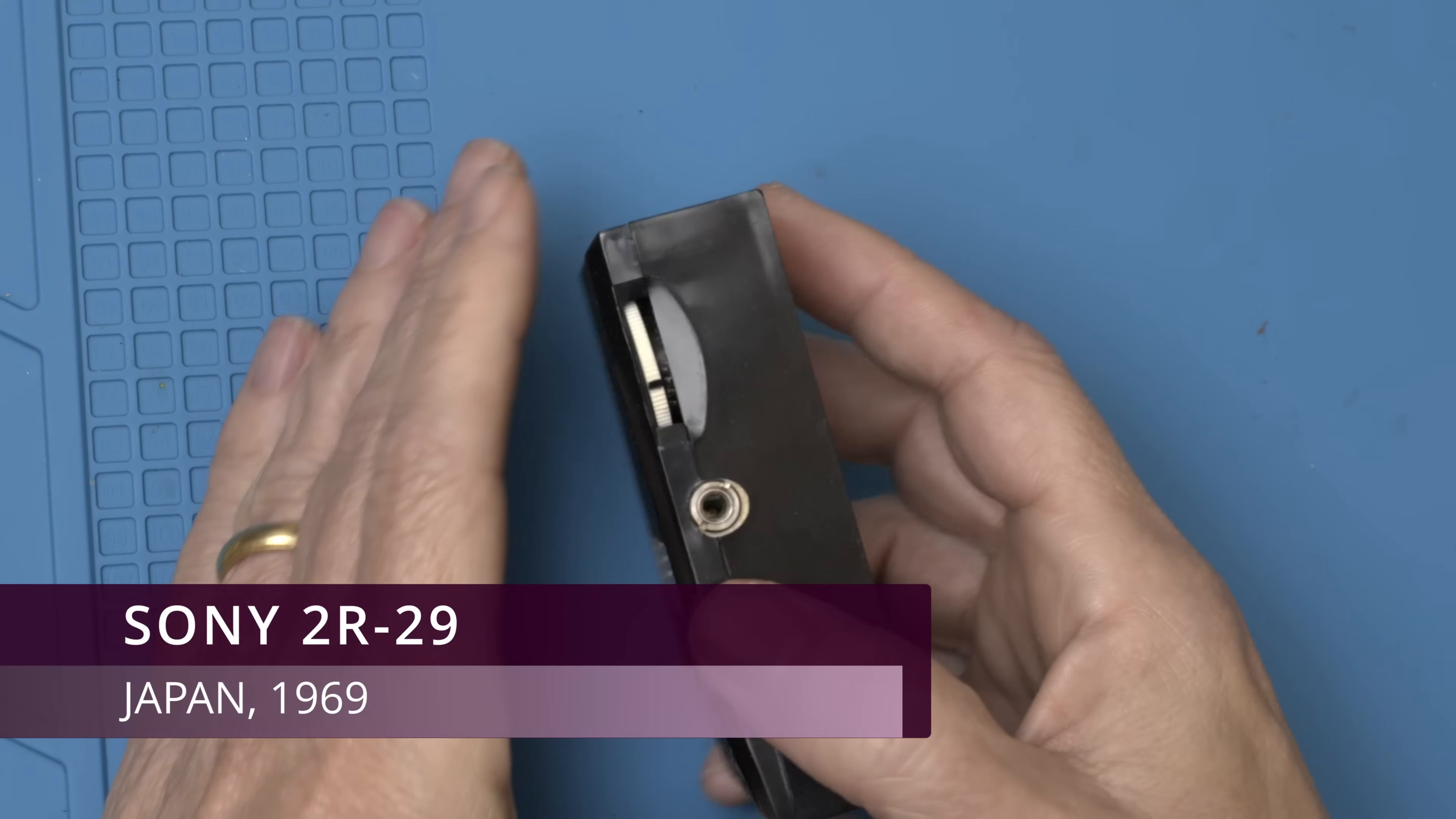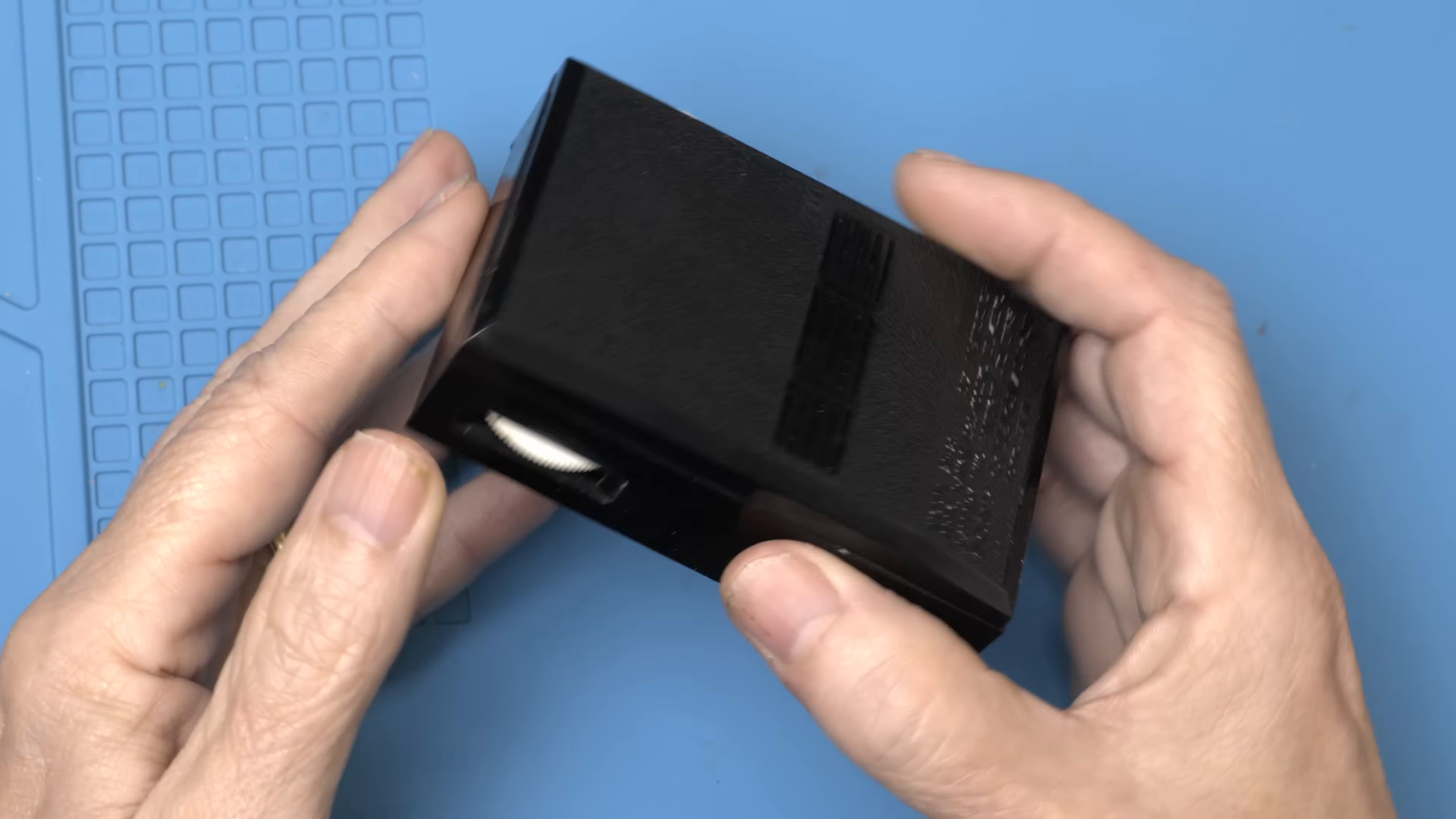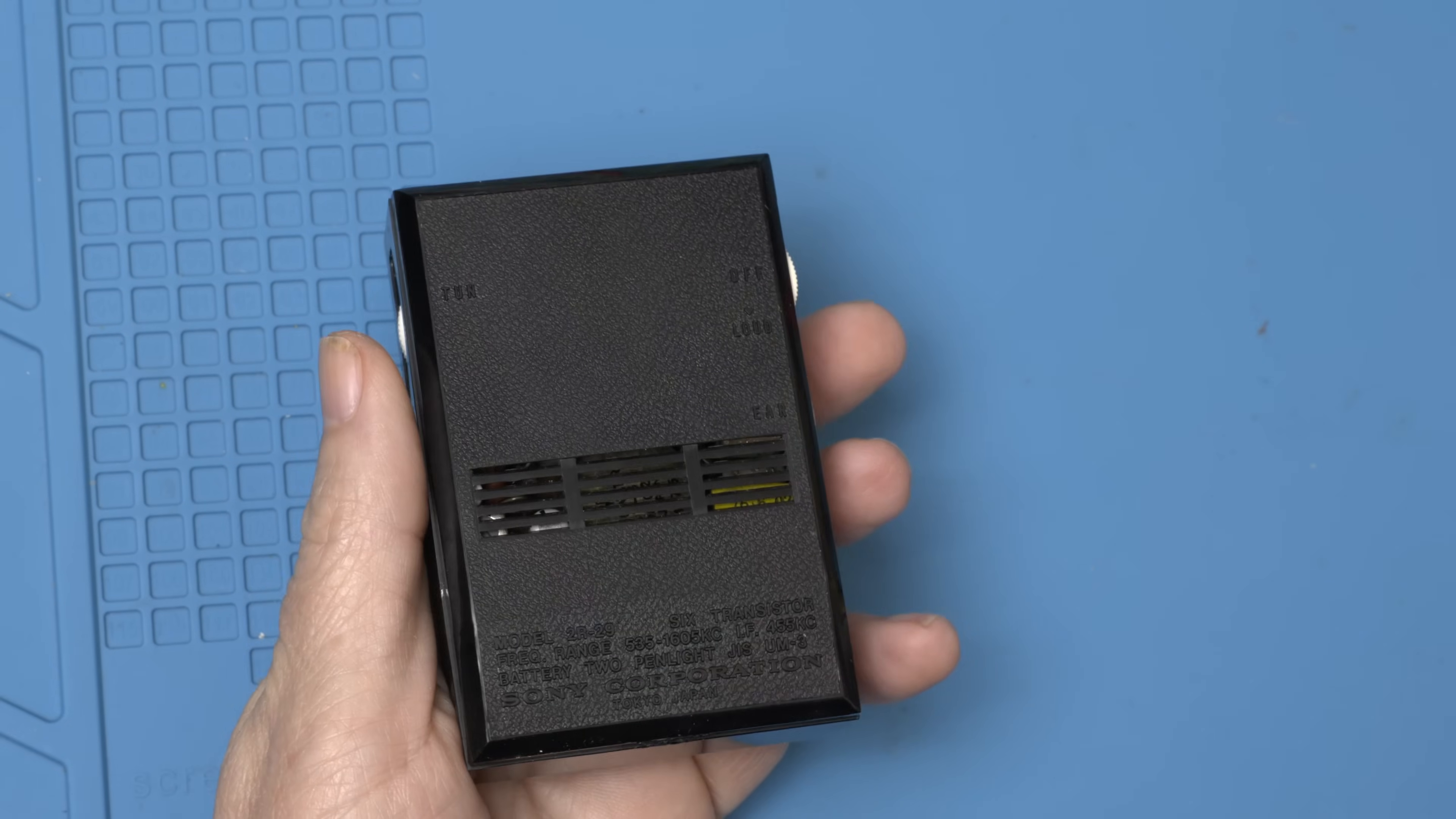Today on the workbench we have the Sony 2R29, made in Tokyo, Japan in 1969. It was described as having bad sound, so let's give it some power and see what's up. Maybe we can bring another piece of history back to its full potential.